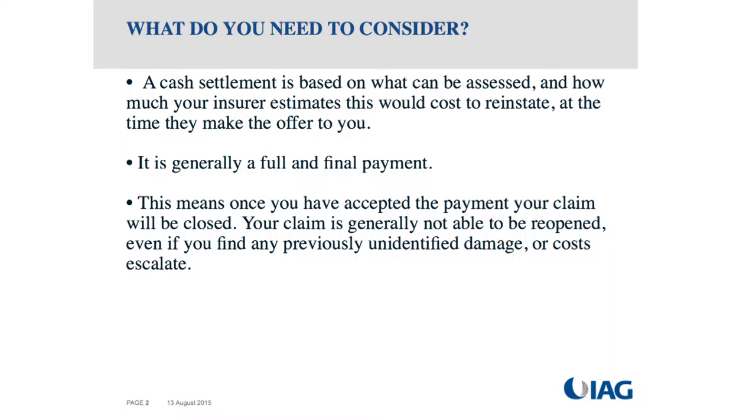If your intention is to reinstate and you're concerned about foundations, you might sign a partial discharge to keep foundations out. But if you're unsure of your intention — if you might reinstate now but possibly buy an existing home later — you might choose a full and final settlement with contingencies. Once you've accepted a full and final payment, that claim generally can't be reopened even if extra costs are found. Make sure everything's been captured: you've signed off the scope of works and the reinstatement costs before signing a full and final discharge.